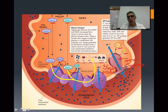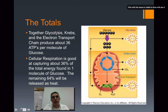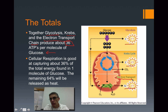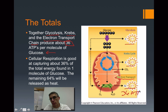From this entire process, we get a total of 32 ATPs produced from the electron transport chain, which produces the bulk of the ATPs in cell respiration. Together, glycolysis, Krebs, and the electron transport chain produce about 36 ATPs per molecule of glucose: 2 for glycolysis, 2 for Krebs, and 32 for the electron transport chain. Taking 32 plus 2 plus 2 gives us 36 ATPs total.